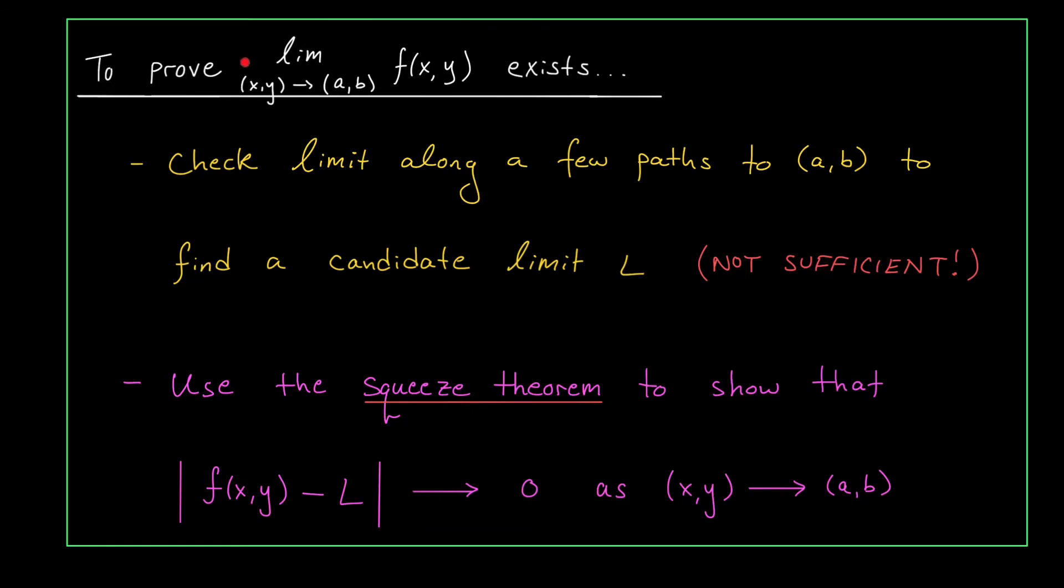Proving that a limit exists is often a bit more challenging, but we do have a strategy that will work in certain situations. The first step is to find a candidate limit. That is, we must determine what the limit should be if it exists. The way we do this is by checking the limit of our function along certain paths to AB, just like we did in the previous case.